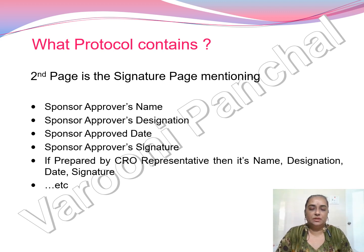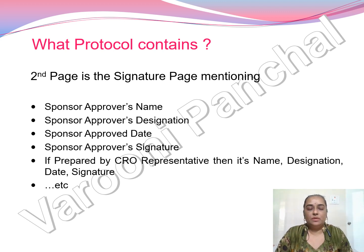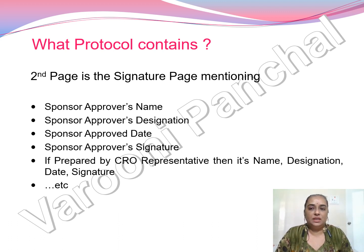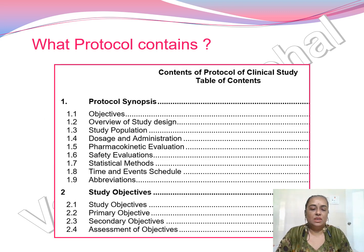At the last minute, the programming team may realize an amendment was done at a certain date but they weren't informed. This really affects the programming and biostatistics team if they are not aware of such amendments or changes in the protocol. It is very essential for the author of the protocol to ensure that correct information is given to all stakeholders involved in the clinical trial.